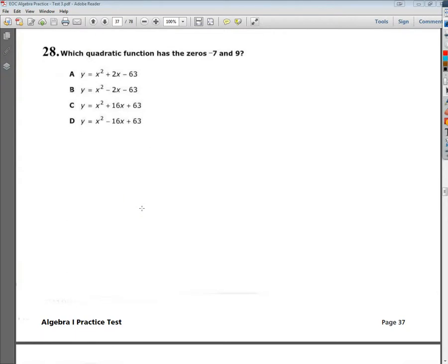Welcome, this is the Algebra 1 End of Course Practice Test Number 1, Question Number 28. The question says, which quadratic function has zeros at negative 7 and 9?